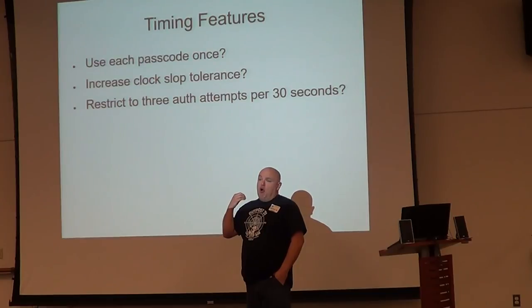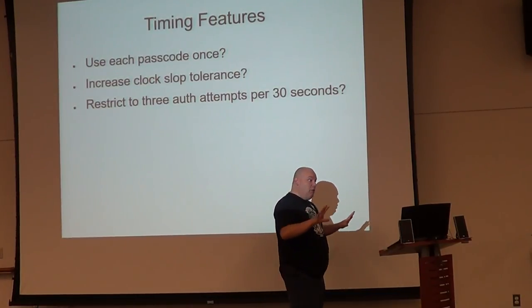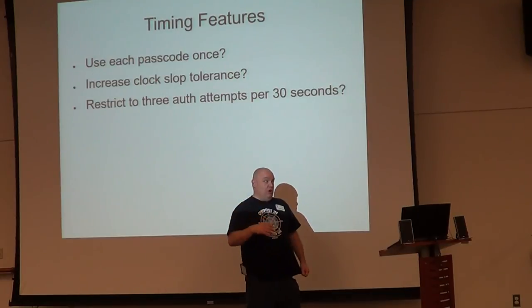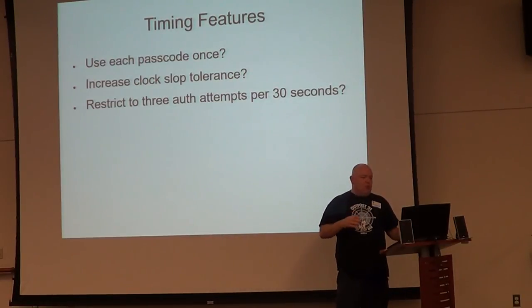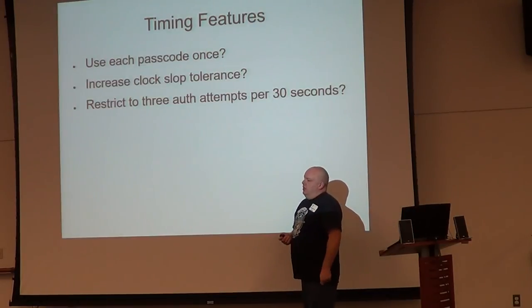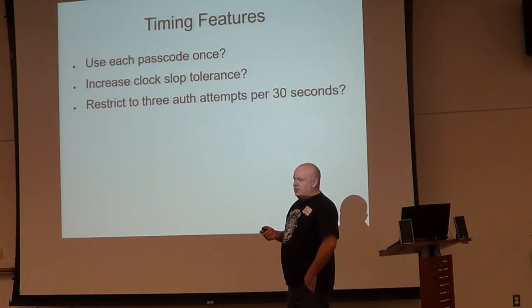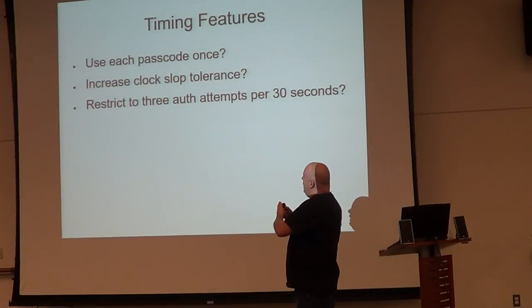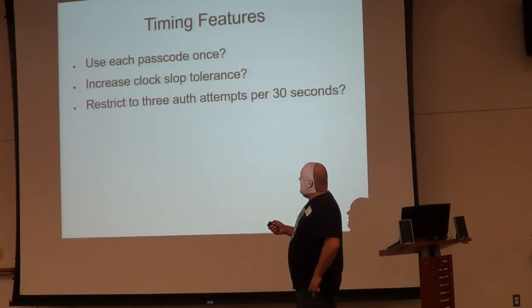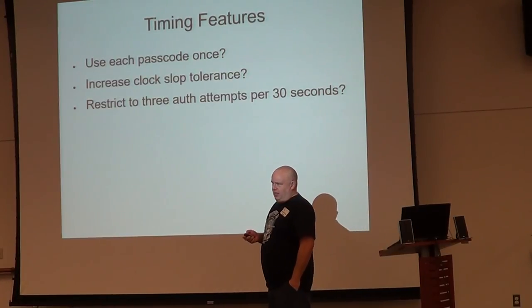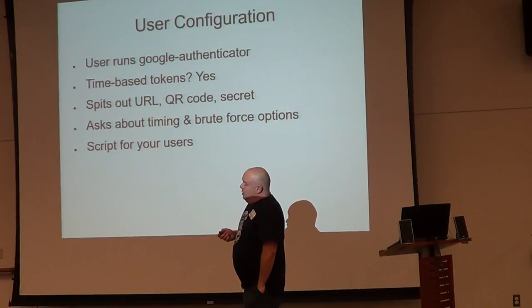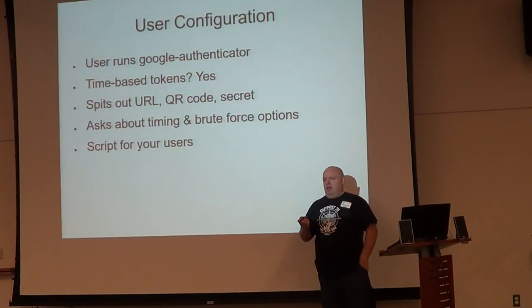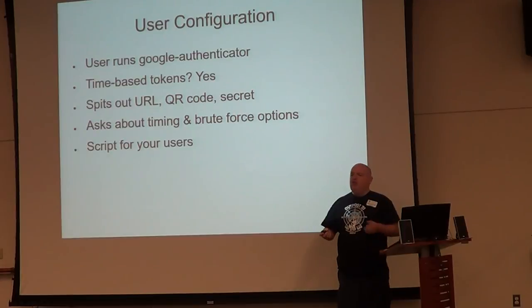This personally would drive me nuts, because if there's something wrong on one of my systems, the first thing I do is open 86 terminal windows into it. However, if you're in certain secure environments and you must be OATH compliant, you get one code every 30 seconds. You can also play with clock slop tolerance — some virtual machine systems have terrible clocks. So you can increase the tolerance, and you can restrict to three attempts in each 30 seconds. So your user who wants to log in will run the program Google Authenticator.